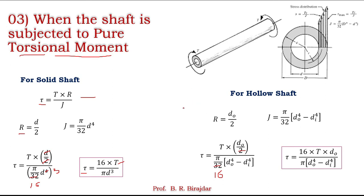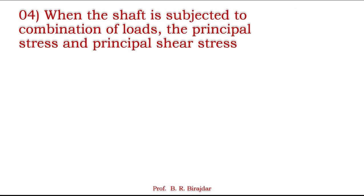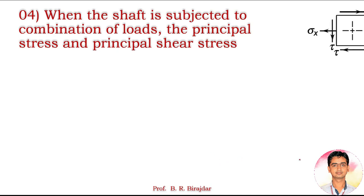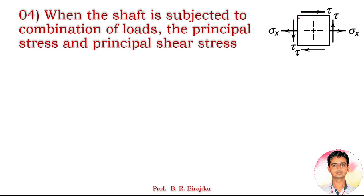The fourth type is a combination of loads. When two types of loads act simultaneously, we find principal stress and maximum shear stress. Using Mohr's circle: on a body with normal stress σ_x and shear stress τ acting together, we can determine the corresponding stresses or the dimensions of the component.